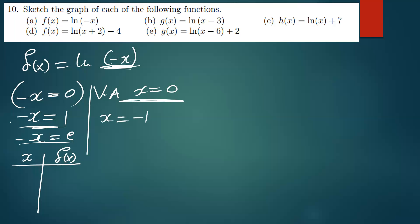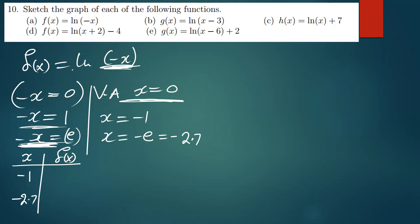When you equate negative x to one, dividing both sides by negative one gives x equals negative one. When you equate to e, dividing by negative one gives x equals negative e, which is approximately negative 2.7. I'll use 2.7 as the approximation.